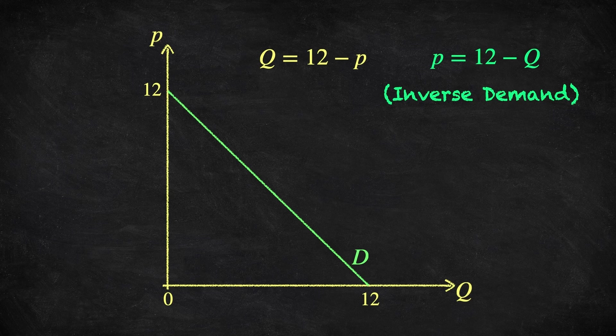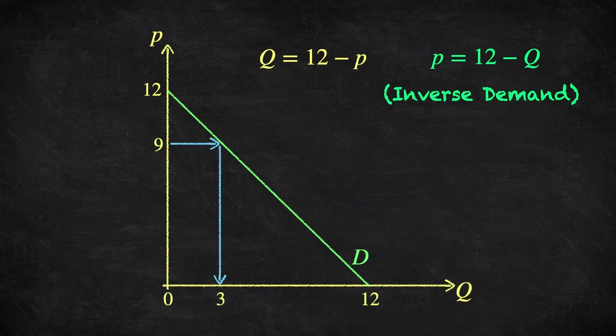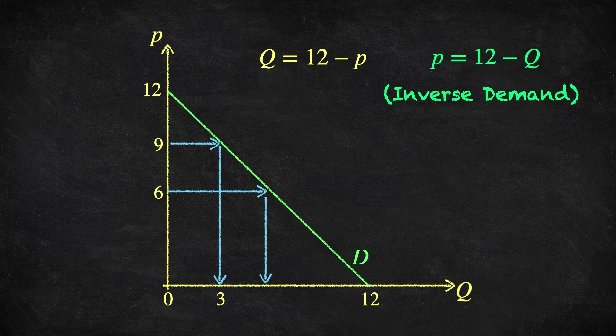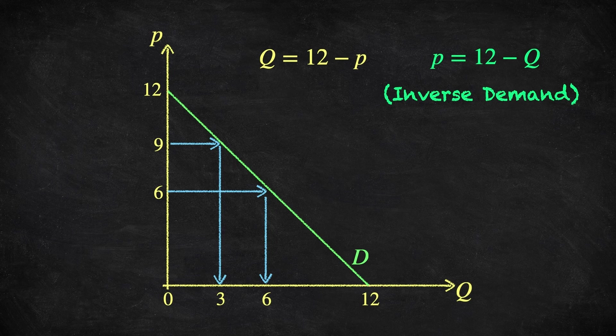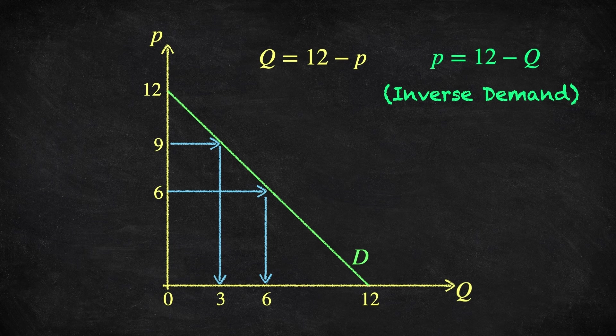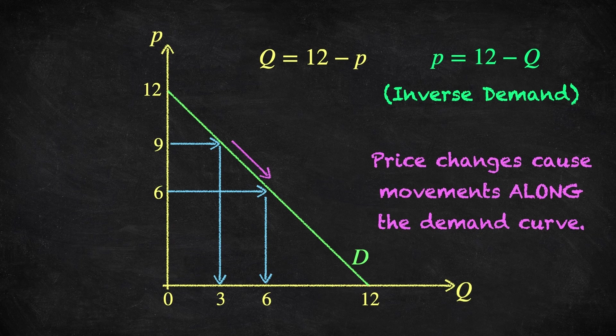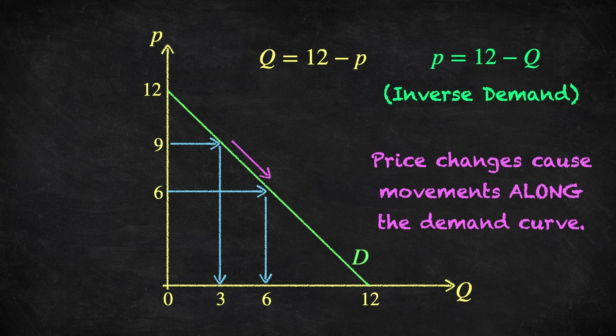Remember, read these diagrams the wrong way. So if the price is 9, then demand is 3. If the price is 6, then demand is 6. So we're taking the price as given and reading off what demand is. Notice that as the price changes, the quantity demanded by the consumer changes, but the demand curve that we've drawn stays down. We call this a movement along the demand curve.